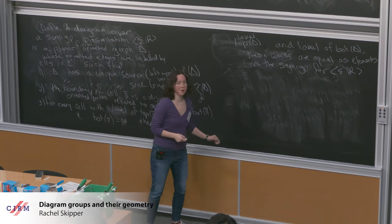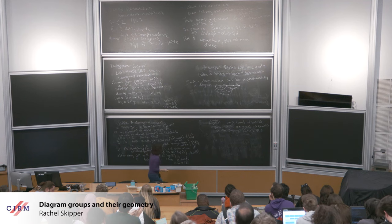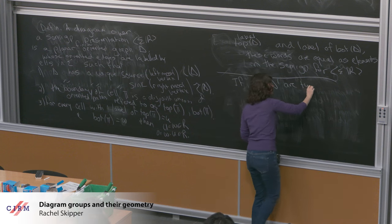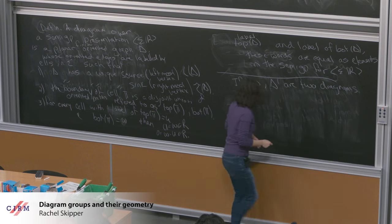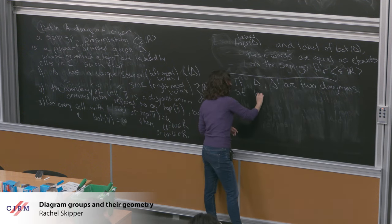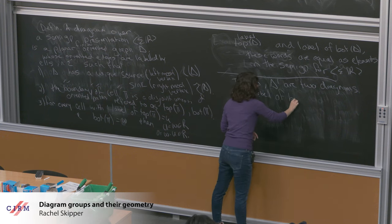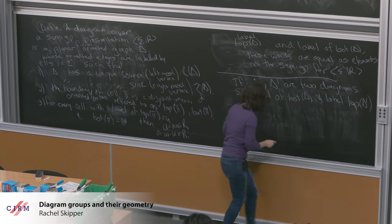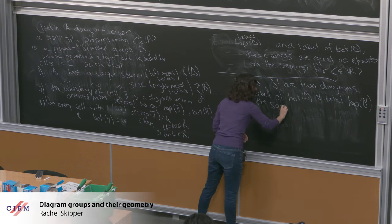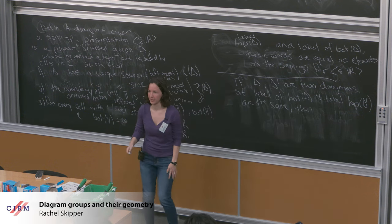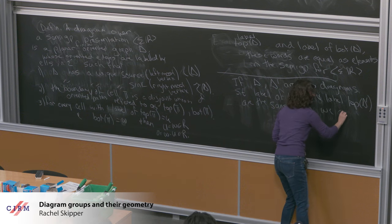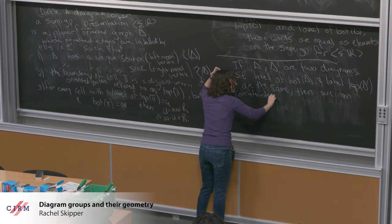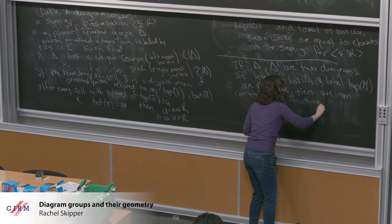We have a way of multiplying diagrams, but the diagram multiplication only works sometimes. If Δ and Δ' are two diagrams such that the label of bot(Δ) and the label of top(Δ') are the same, then we can multiply by concatenation — just stack the diagrams.